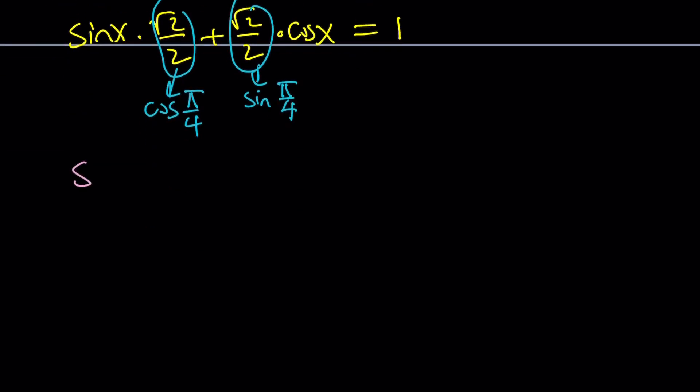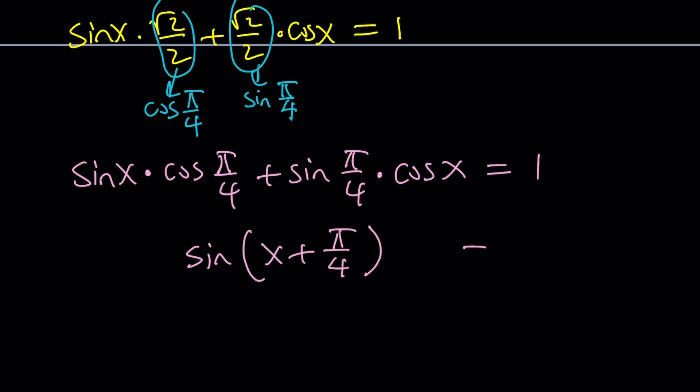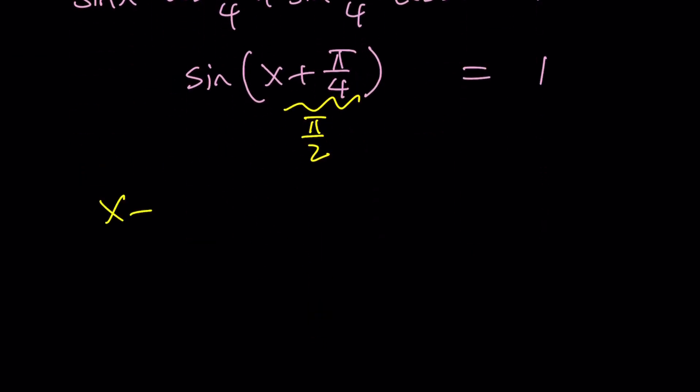If you call this cosine of pi over 4, which is 45 degrees, and if you call this sine of pi over 4, we get sine x times cosine pi over 4 plus sine pi over 4 times cosine x. What does this tell you? If it tells you the sum formula, you're on the right track. So this is basically sine of x plus pi over 4, and it's equal to 1. Sine what equals 1? There's only one value between 0 and 2 pi, and that is pi over 2. So x plus pi over 4 must be pi over 2, then x must be pi over 4.